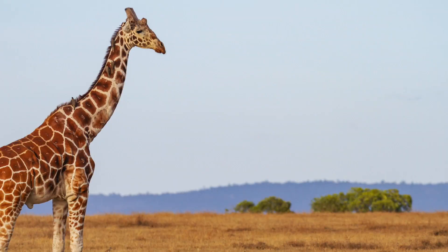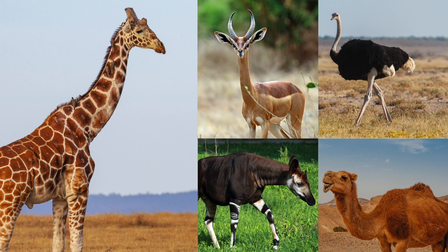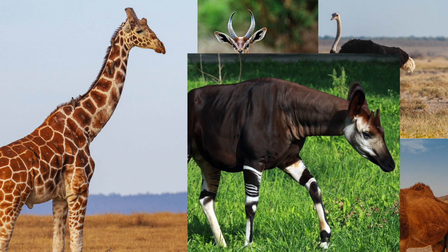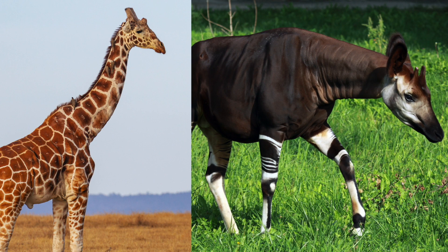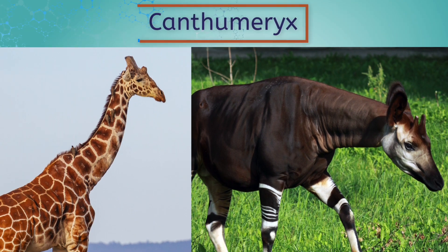Let's look at the giraffe again. What animal do you think it's most closely related to? Look at these options and make your best guess. Its closest living relative is the Okapi. The giraffe and Okapi share a common ancestor called a Canthumerix. You've probably never heard of a Canthumerix because they went extinct around 12 million years ago, but their legacy lives on in giraffes and Okapis, which both evolved from them.